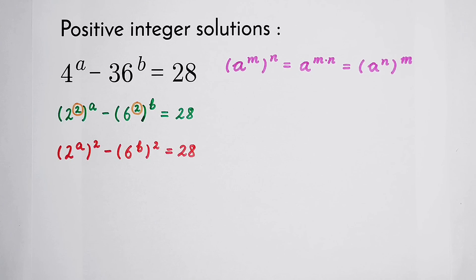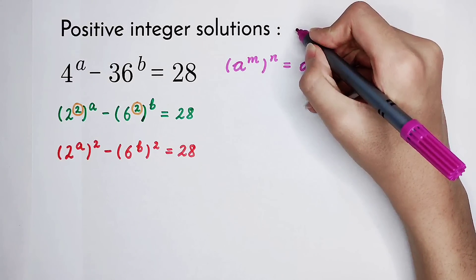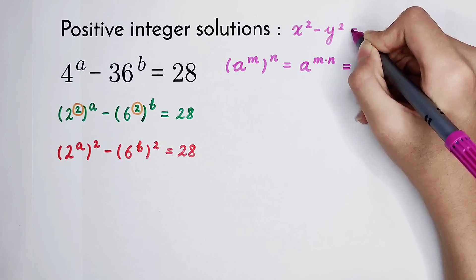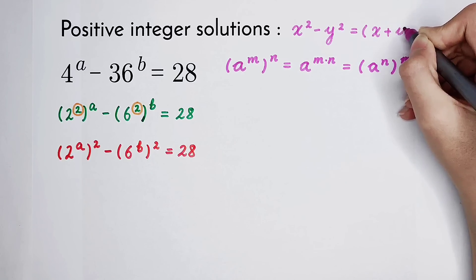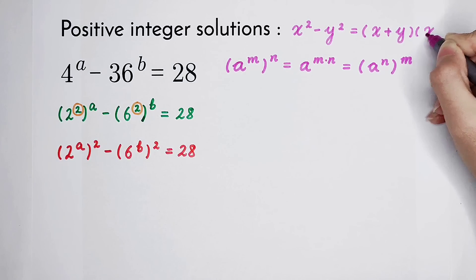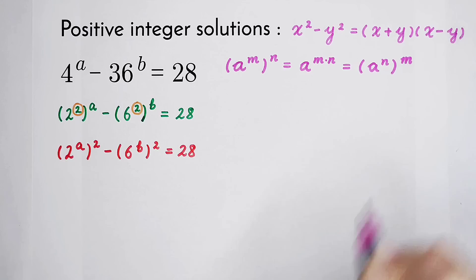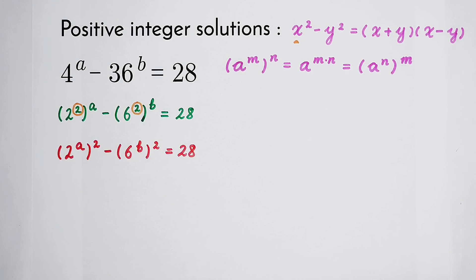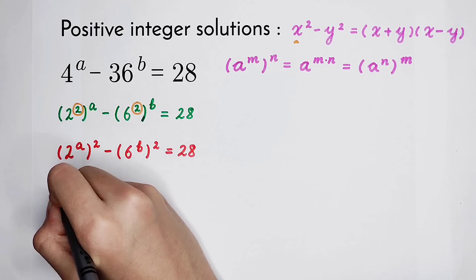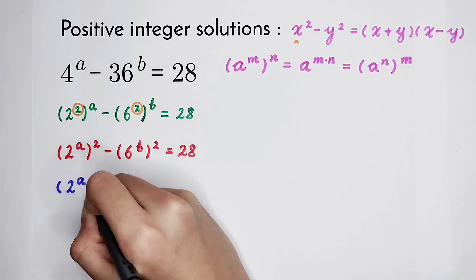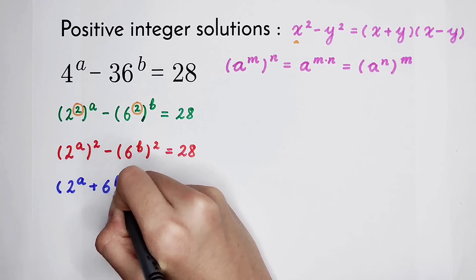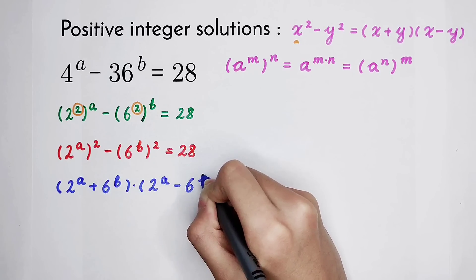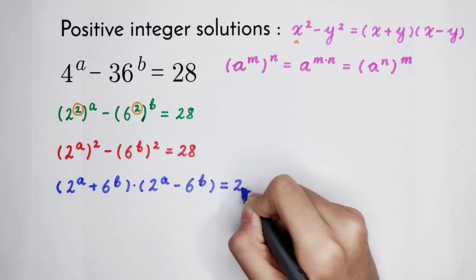Now we have to use another formula: x squared minus y squared is equal to (x plus y) times (x minus y). Here, x is 2 to the power of a and y is 6 to the power of b. So it equals (2 to the power of a plus 6 to the power of b) times (2 to the power of a minus 6 to the power of b) equals 28.